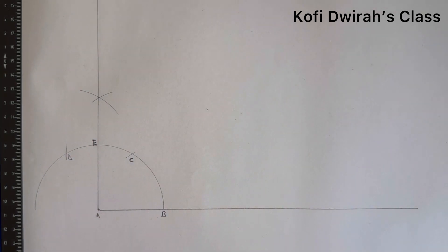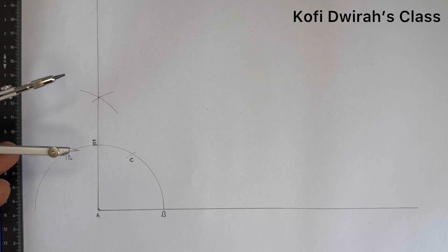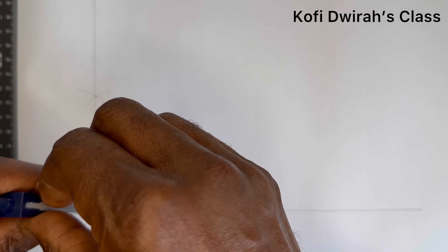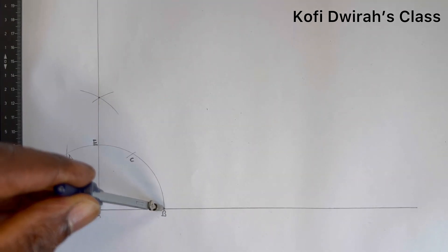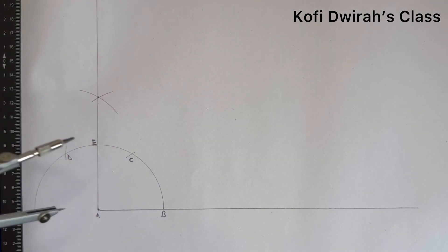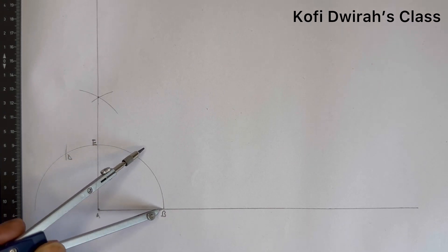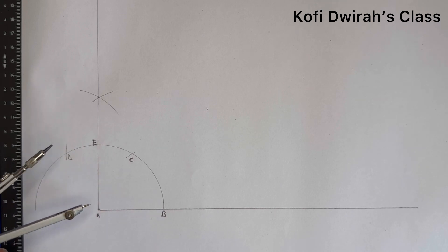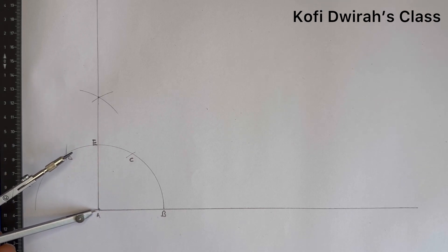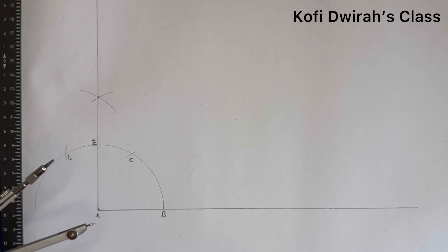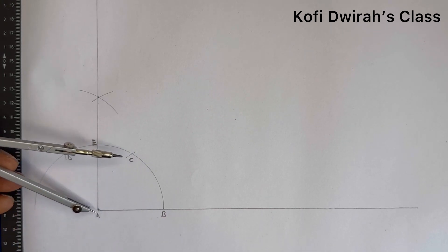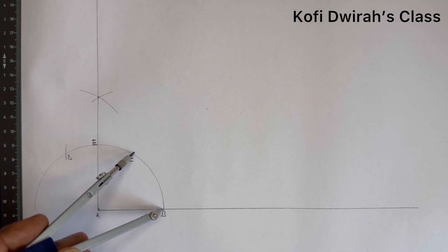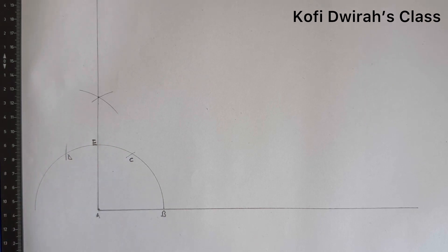To trisect the angle, at point A you open your compass to B. The distance from A to B is your radius. When we were constructing the 90 degrees angle, from point A to point B we drew an arc, and with the same radius we got point C.